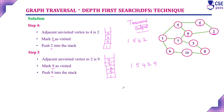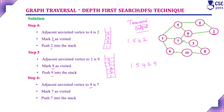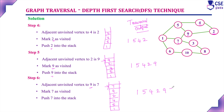Next, consider the adjacent unvisited vertex to 9. The adjacent unvisited vertex is 7, because 5 and 2 are already visited. Push 7 into the stack. The stack now contains 1, 5, 4, 2, 9, 7. The top of the stack is 7. The traversal output is 1, 5, 4, 2, 9, 7.